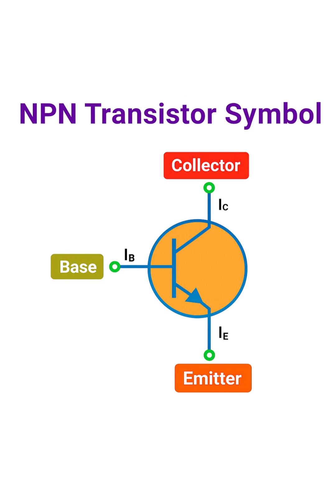A simple way to remember this is the mnemonic NPN stands for not pointing in. This arrow indicates the direction of conventional current flow. So, in an NPN transistor, a small current flows into the base, which allows a larger current to flow from the collector out through the emitter.